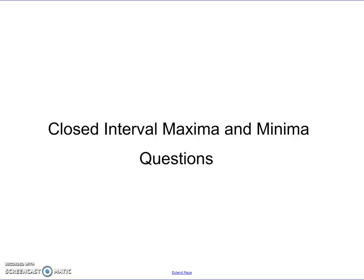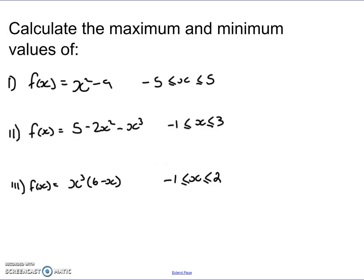We've covered calculating maximum and minimum values when given a function on a closed interval. In this video I'm going to set you a couple of questions. I want you to pause the video, have a crack at them, then come back and check your answers. Calculate the maximum and minimum values of these three functions: x squared minus 9 on [-5,5]; 5 minus 2x squared minus x cubed on [-1,3]; and x cubed bracket 6 minus x on [-1,2].